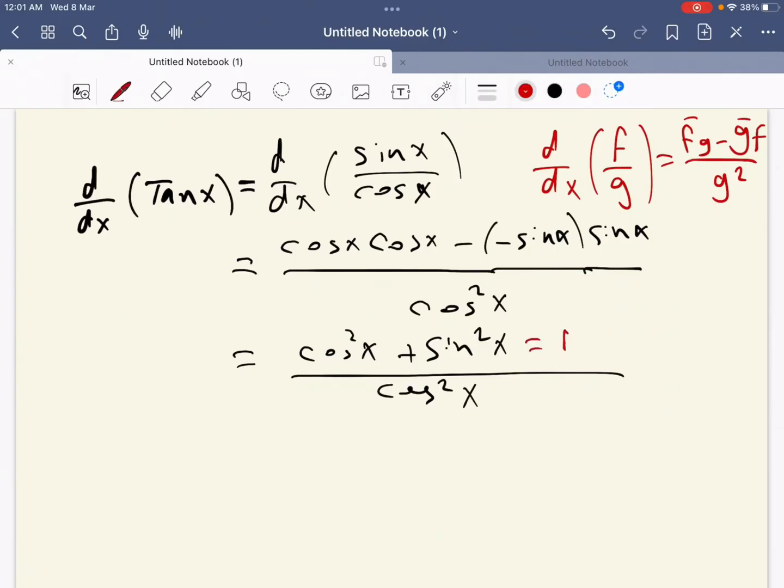We know cosine squared plus sine squared equals one, so we can write this as one over cosine squared of x, and this equals secant squared of x. So d/dx of tan x equals secant squared x.